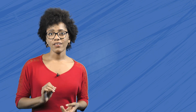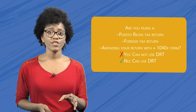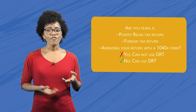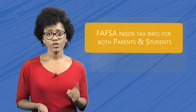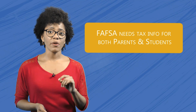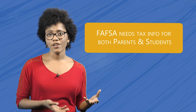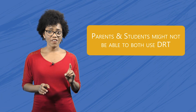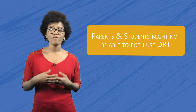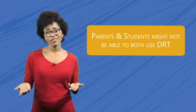The last question is about what kind of return you file. Are you filing a Puerto Rican tax return, a foreign tax return, or amending your tax return with the 1040X form? If any of these apply to you, you can't use the DRT. Remember, the FAFSA needs this information from both parents and students. It might be that one of you can use the DRT and the other can't. For instance, if the student files as single but the parents are married and file separately, the student could use the DRT, but their parents could not.